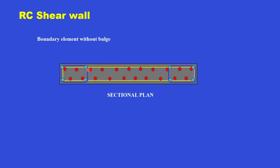The boundary element can also be embedded inside the shear wall, so there is no bulging at the end — the boundary elements are embedded within the thickness of the shear wall itself.